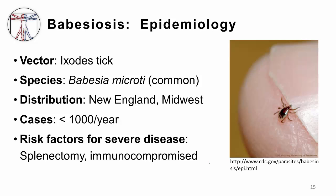The last organism we're going to talk about is Babesia, or babesiosis infection. Opposed to malaria, which is transmitted by a mosquito, this is tick-derived — mostly the Ixodes ticks — and you can see in this image how easy it is to be infected by a tick and not know it, given how small they are. Babesia microti is the most common species to cause infection in the U.S., and predominantly it's in New England and the Midwest during the summers. There are fewer than 1,000 cases per year, and risk factors for severe disease are really those who are immunocompromised and have had a splenectomy.